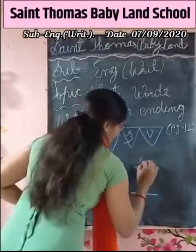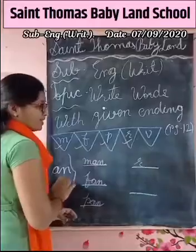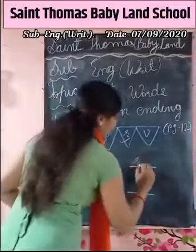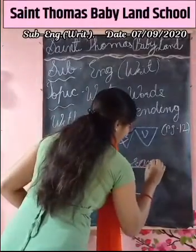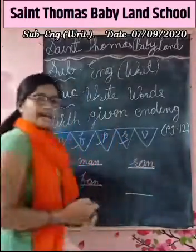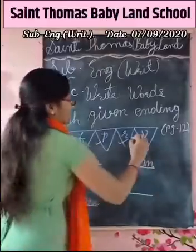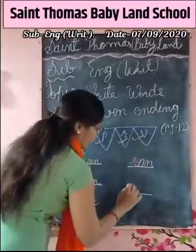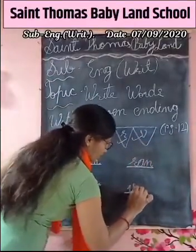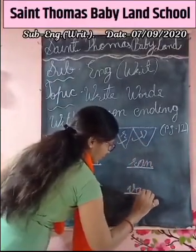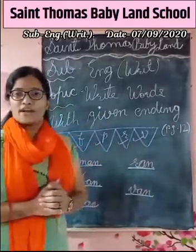Next letter R. Two ending letters A, N. R, A, N — Ran. Last is V. V, A, N — Van.